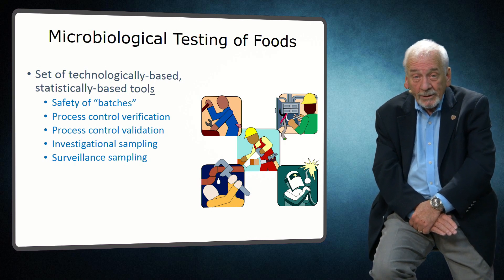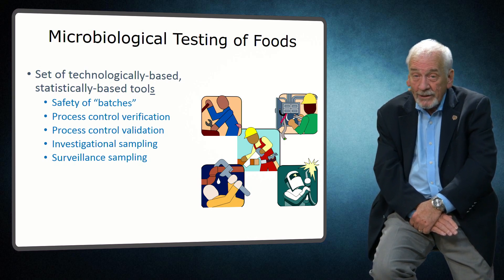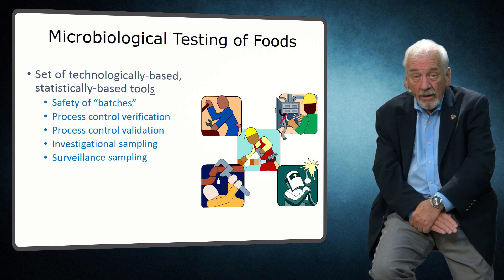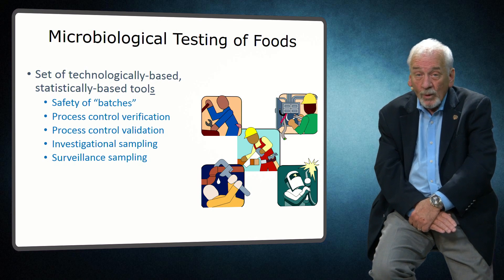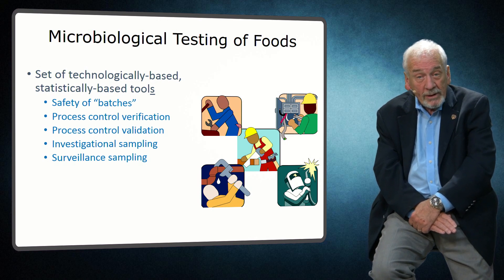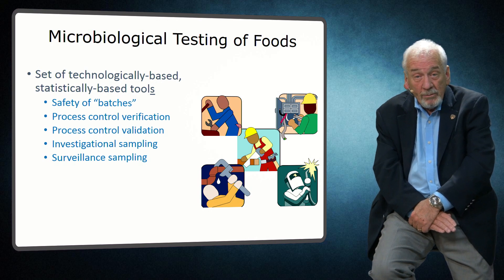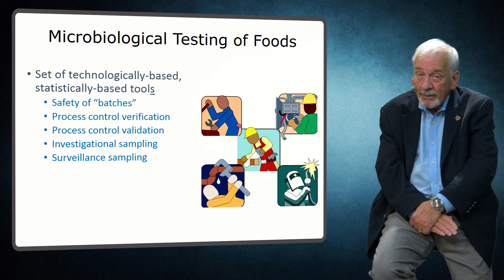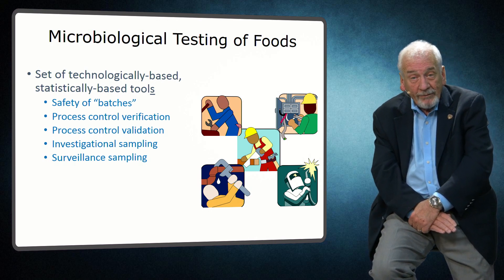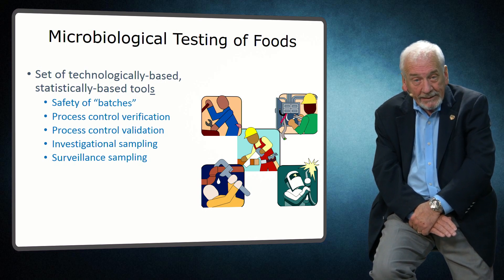Furthermore, microbiological testing is used extensively to investigate the loss of effective control of quality of incoming ingredients, the loss of process control, breakdown of distribution and marketing systems, and how foods are being used or even misused by the ultimate consumer. This can include targeted investigational sampling or more generalized surveillance to assess the status of the food industry segments.